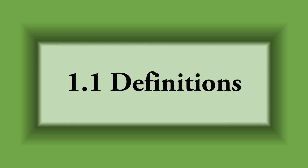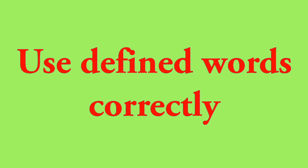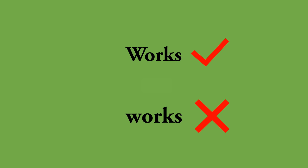Sub-clause 1.1: definitions. When you're referring to FIDIC documents, you must be very familiar with these defined words. Be mindful that you must use these defined words in your documentation and correspondence exactly the same way as they are written in this book. For example, 'Accepted Contract Amount' should be written like this, and 'Works' should be like this. This is really important.